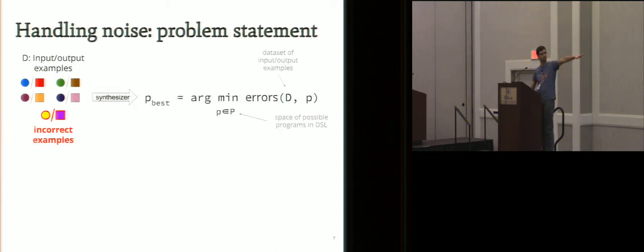So this is the problem statement. There is D big, the dataset of input-output examples. So far, synthesizers mostly try to do arg min of number of errors on the dataset, where P is in the range of the DSL. That satisfies everything, which will be the arg min of this error.